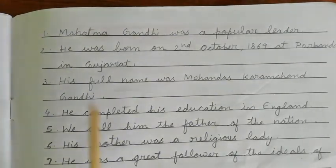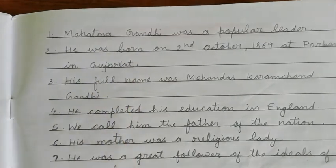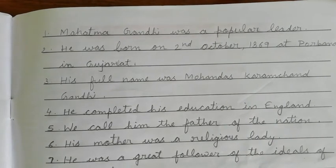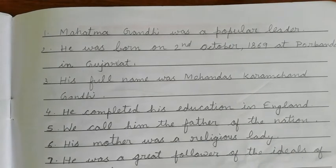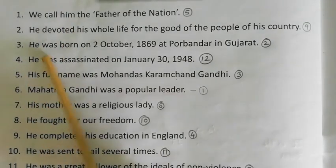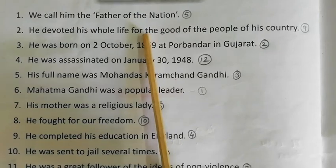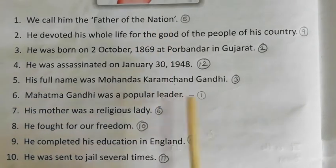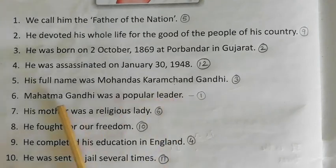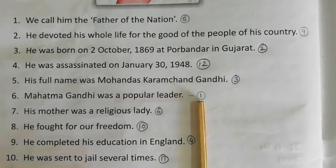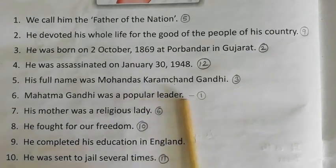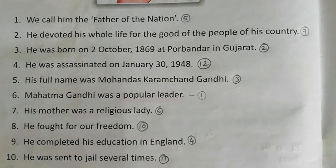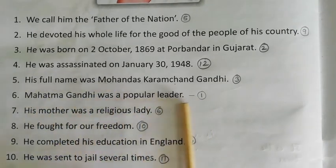Now I will tell you which sentence is number 1, which is number 2, and so on. On page 68, I will tell you the correct order. The sentences are given and I will tell you the correct order. The first sentence is: 'Mahatma Gandhi was a popular leader.' I will mark number 1, and you should also mark the numbers.